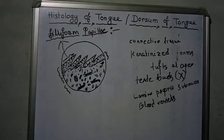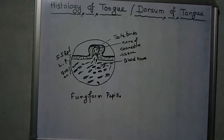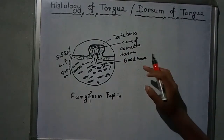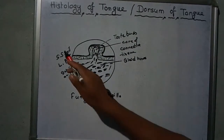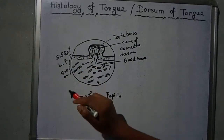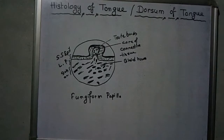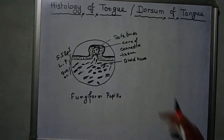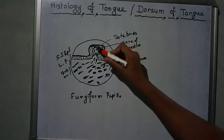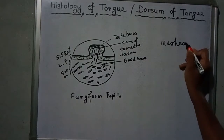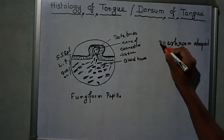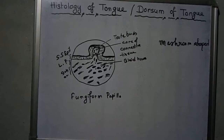The parts of the filiform papillae include a core of connective tissue, blood vessels, stratified squamous epithelium, lamina propria, and submucosa. Fungiform papillae are found between the filiform papillae. They are mushroom-shaped and found on reddish prominences. Fungiform papillae contain a few taste buds.